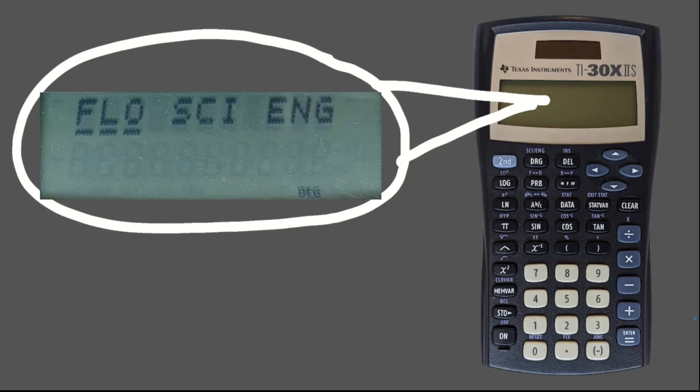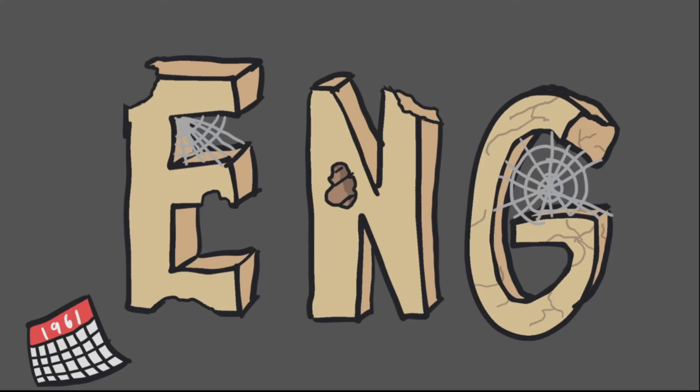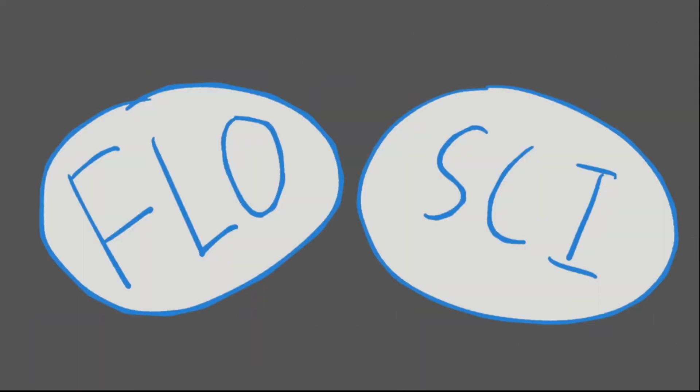The first thing to know is that nobody has ever, in the 62-year-long history of electronic calculators, used ENG. No one knows what it does, no one knows why it's there, and there are many people who even deny its very existence. The two players here are FLO and SCI. FLO is your standard something-point-something decimal display, a floating-point number. Your calculator will probably be on this by default. The SCI option, on the other hand, displays all of your answers in scientific notation. Pretty neat! And better yet, it uses actual scientific notation, without multiplication by a power of 10 and everything. This is pretty great!